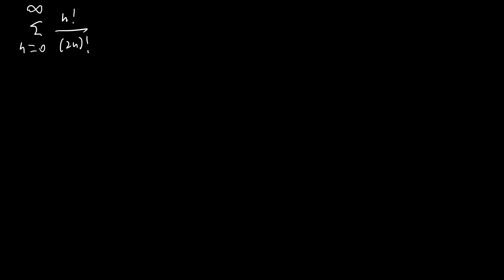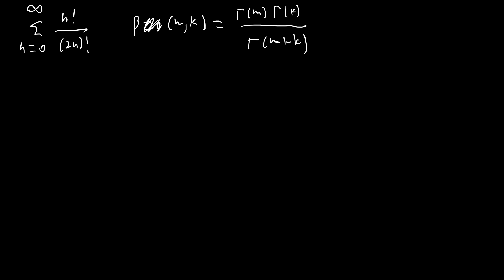A really cool trick when evaluating infinite sums: when you see a factorial on the top and on the bottom, the first thing you should be thinking of is the beta function. We know that beta of m, k equals gamma(m) times gamma(k) over gamma(m+k). If we can make the bottom match up and one of these gamma functions match up, we have a nice representation of the beta function, which can be easily converted into simple-looking integrals.